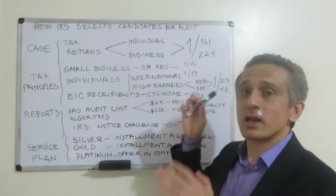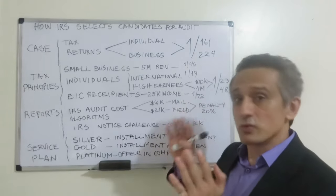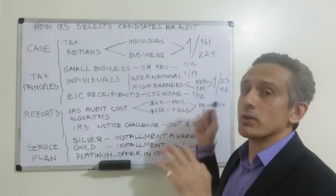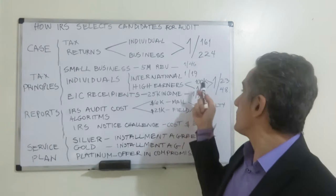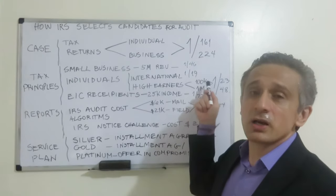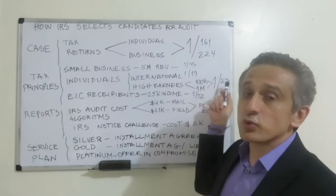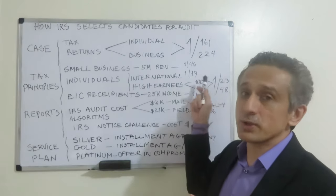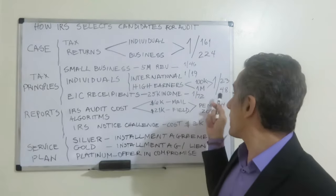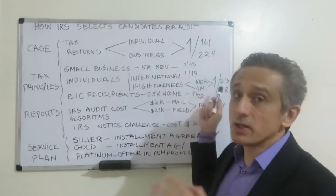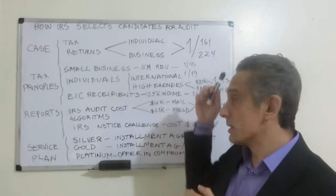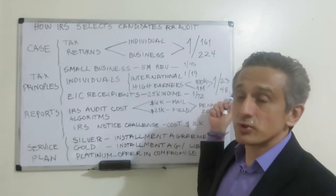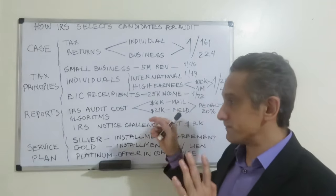In terms of high earners, there are two tiers: $100,000 and $1 million. In the $100,000 category, out of every 23 returns, one will be audited. For the $1 million income and above category, out of every 48 returns, one will be audited.